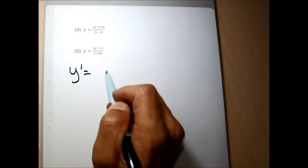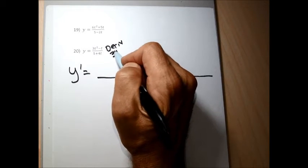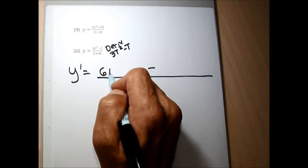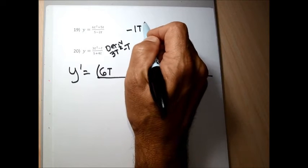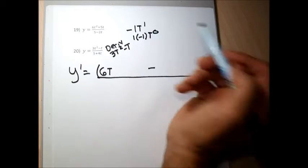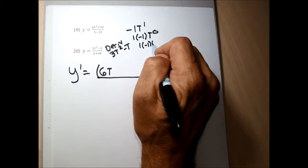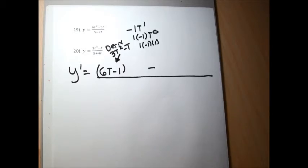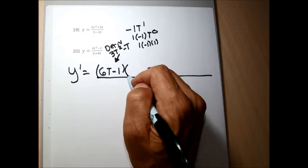For problem 20, y prime: the first thing I write is a fraction with a minus sign. The derivative of the numerator, 3t squared minus t, is 6t minus 1 — for 3t squared, 2 times 3 is 6, lower the exponent to get 6t; for minus t, bring down the exponent 1 times coefficient minus 1, lower exponent to 0, giving minus 1. So the derivative of 3t squared minus t is 6t minus 1. Then I write the entire denominator, 5 plus 4t.